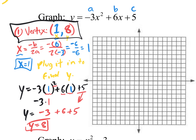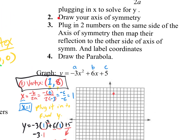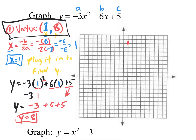Let's actually graph this most important point (1, 8): 1 on the x, 8 on the y — it's right there. Step two: draw your axis of symmetry — the vertical line that crosses right through the vertex. I always do a green dotted line. If they ask for the equation of the axis of symmetry, it's always x equals the x value of your vertex — so in this case, x equals 1.